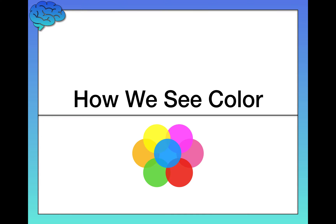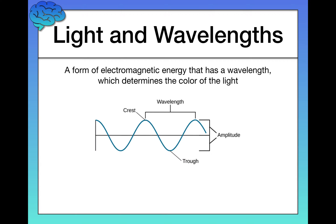In this video, we're going to talk about color perception — how we see color. We have to start by talking about light and wavelengths, because that's what determines color in the first place. Light is a form of electromagnetic energy that has a specific wavelength, and that wavelength determines the color that we see.